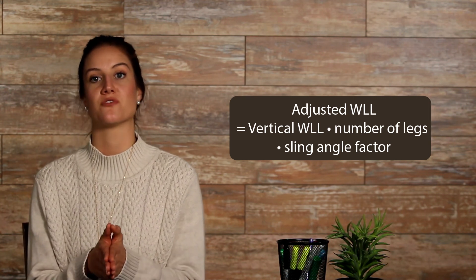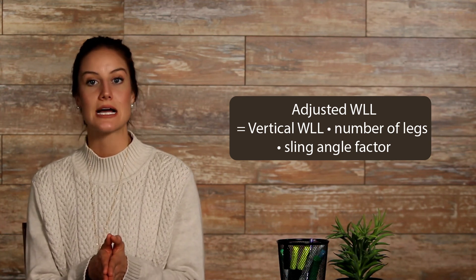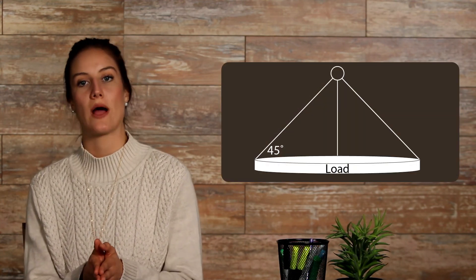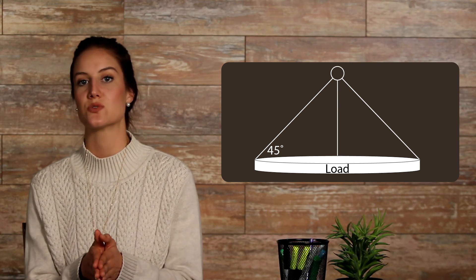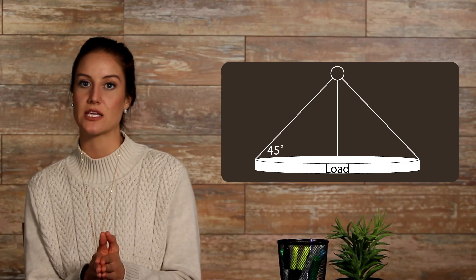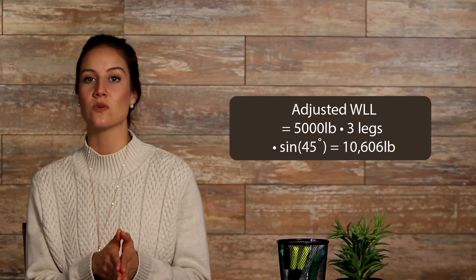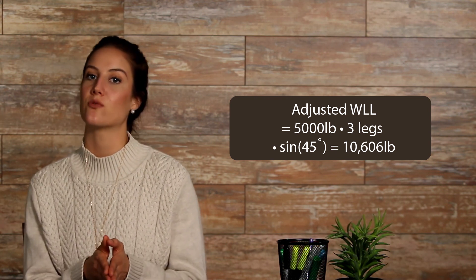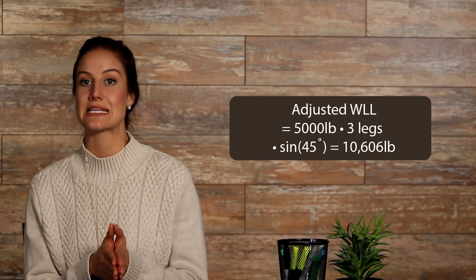Adjusted working load limit equals vertical working load times number of legs times sling angle factor. For example, consider a four-legged wire rope sling configured with 45-degree angles between the load and each leg. It is important to note that for chain slings, a four-legged sling's adjusted working load limit uses three legs in the equation, because of the difficulty in rigging a chain sling to distribute the load equally among four legs. Riggers often apply the same reduction to four-legged slings of any material for increased safety factor. If each leg of the sling has a vertical working load limit of 5,000 pounds, the reduced working load limit would be: adjusted working load limit equals 5,000 pounds times three legs times sine of 45 degrees, which equals 10,606 pounds.